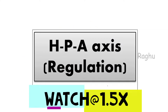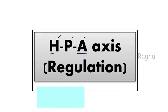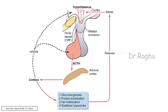Next, let's understand the regulation of secretion of cortisol. To understand this, we need to know the meaning of the HPA axis. H stands for hypothalamus, P stands for pituitary, and A stands for adrenal. The most important regulator of the secretion of cortisol is stress.